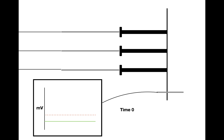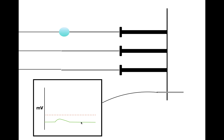For trial one of this experiment, we're only going to send in one stimulus at one dendrite. When we send this stimulus in, we see that the cell depolarizes up to a certain level, and then it repolarizes back down to the resting potential. In trial two, we're going to send in two signals at two dendrites simultaneously. What we see on the monitor is that the cell depolarizes once again, but to a much higher level than in trial one, and then it comes back down to the resting potential.